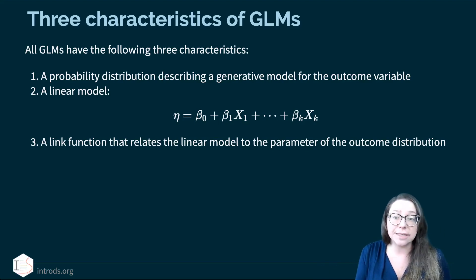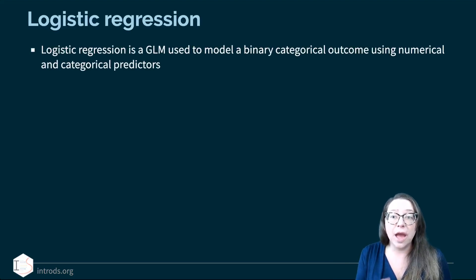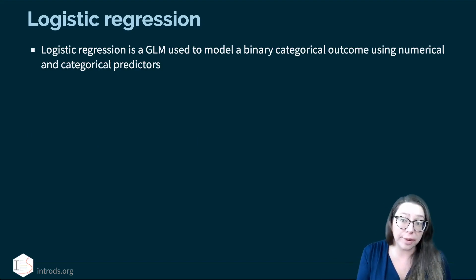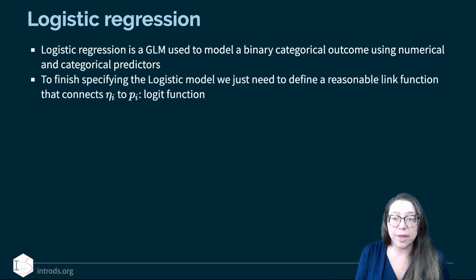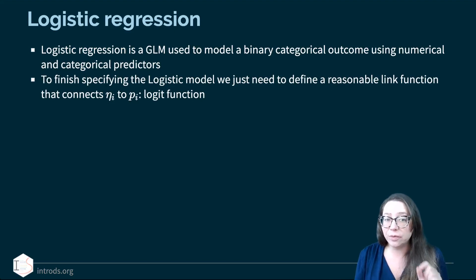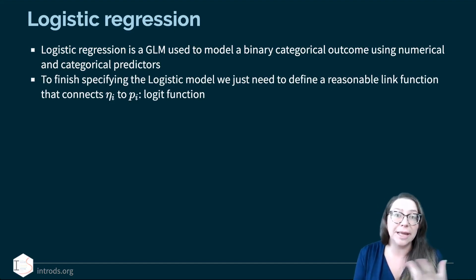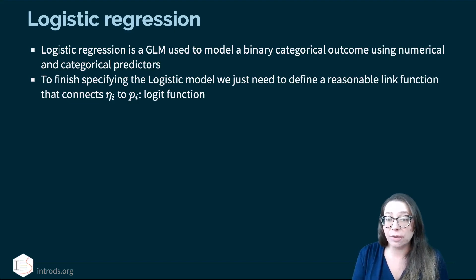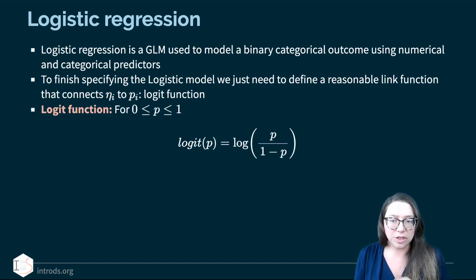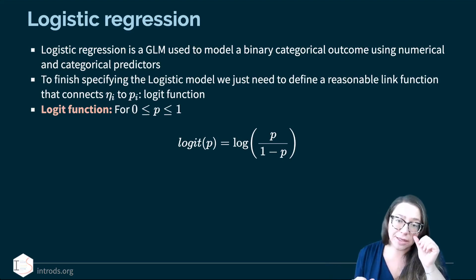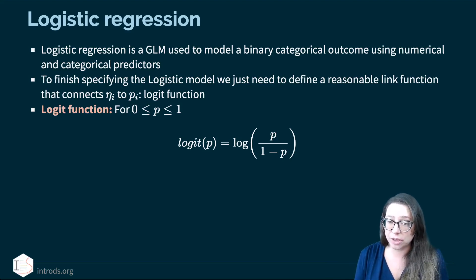In logistic regression — a GLM used to model a binary categorical outcome — we need to define a link function that connects eta_i (the result of our linear model) to p_i (the probability that an email is spam). The most commonly used link function in logistic regression is the logit function. The logit is defined for probabilities between zero and one, and logit(p) is the log of p divided by (1 minus p) — that's the natural log.